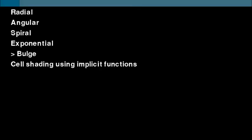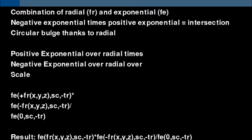Next there's the bulge function. It's a combination of f_radial and the exponential function. If you multiply the exponential function when it's mirrored, one is mirrored and one is in the right direction, you'll get zeros wherever one of either functions is zero and you'll get a one where they're both one. So it's an intersection operator. Furthermore, the bulge is circular through the radial function. So the function is basically a positive exponential function over the radial times the negative exponential function over the radial over a scale factor.